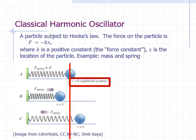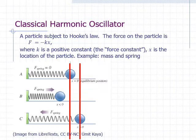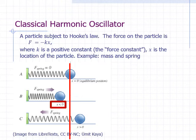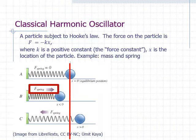Hooke's law basically says that if the particle is not at the equilibrium position, it will experience a force that will push or pull it towards the equilibrium position. If the particle is located to the right of the origin at a positive x location, it will experience a force from the spring that pulls it to the left towards the equilibrium position. The leftward force is negative. If the particle is located left of the origin at a negative x location, it will experience a force from the spring that pushes it to the right again towards the equilibrium position. The rightward force is positive. The farther the particle is from the equilibrium position, the stronger the force acting on it.